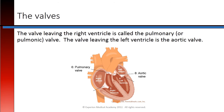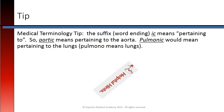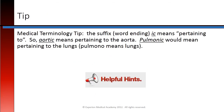The valve leaving the right ventricle is called the pulmonary or pulmonic valve. Here's another medical terminology tip: the suffix -ic means pertaining to. So aortic means pertaining to the aorta, and pulmonic means pertaining to the lungs because pulmono means lungs.